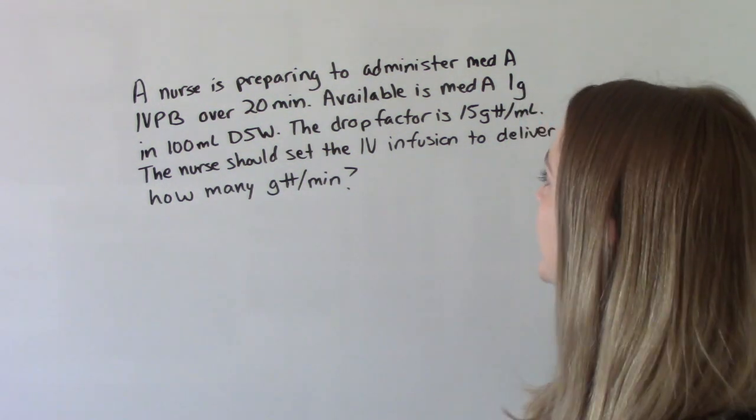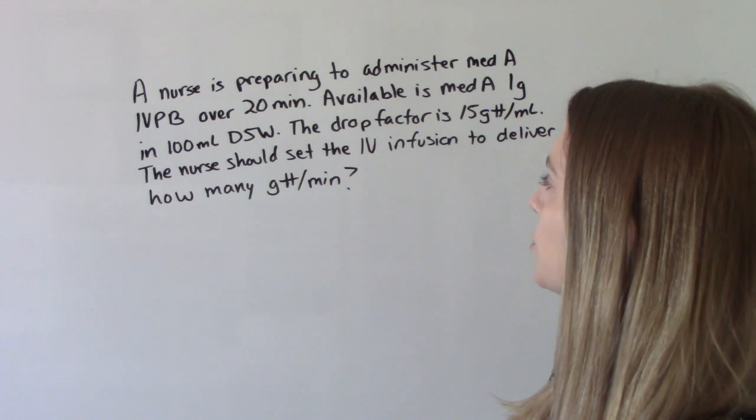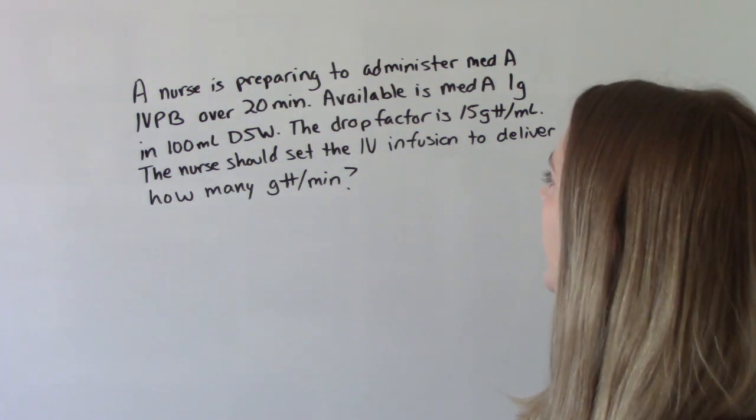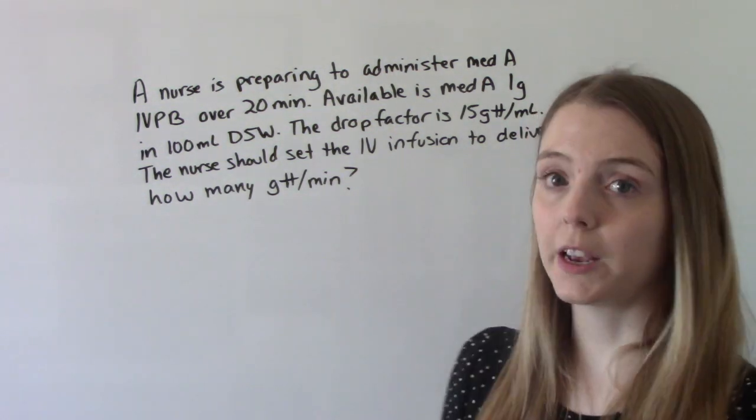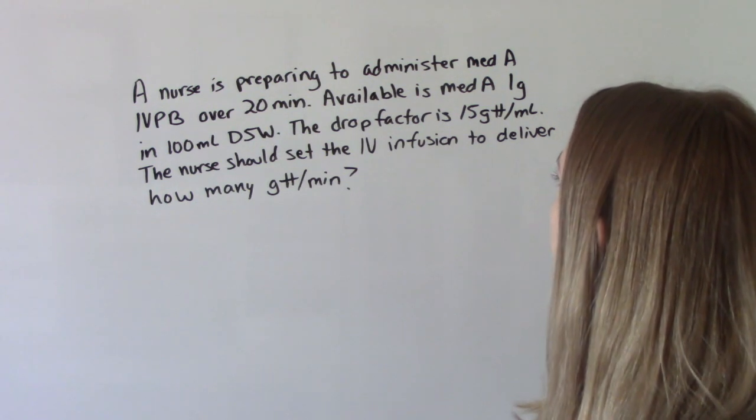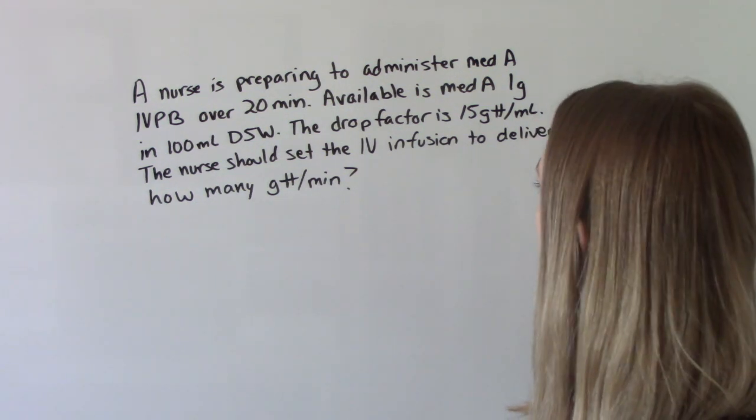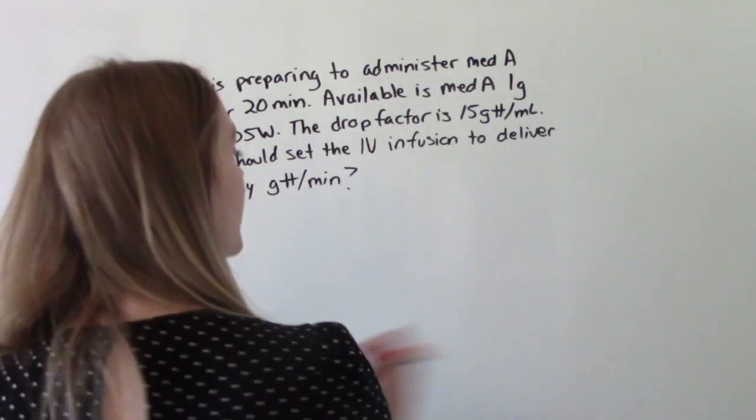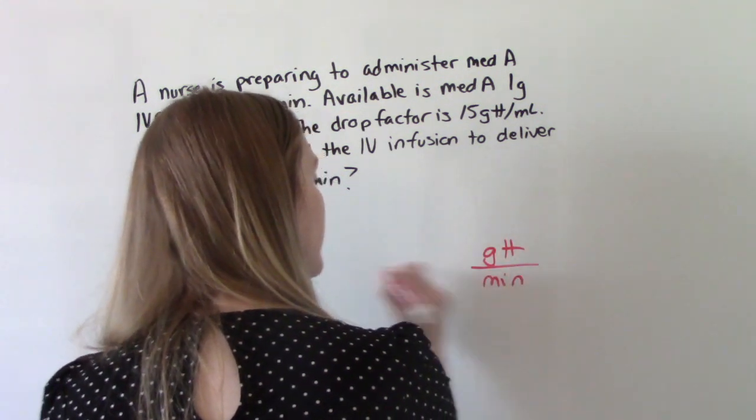A nurse is preparing to administer medication A IV piggyback over 20 minutes. Available is medication A 1 gram in 100 ml's D5W. The drop factor for your manual IV tubing is 15 drops per ml. So the nurse should set the IV infusion to deliver how many drops per minute. So we're looking for drops per minute.